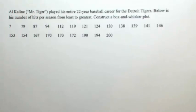Al Kaline, nicknamed Mr. Tiger, played his entire 22-year baseball career for the Detroit Tigers. Below is his number of hits per season from least to greatest. Construct a box and whisker plot.